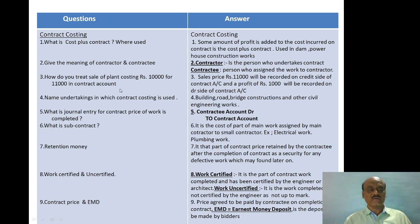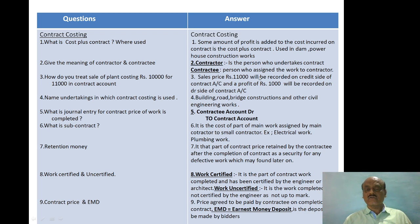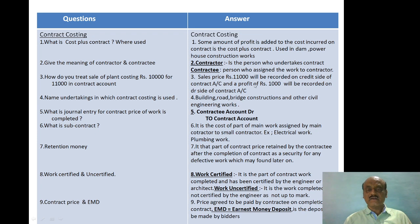How do you treat the sale of plant costing ₹10,000 for ₹11,000 in contract account? The amount of ₹11,000 will be recorded on the credit side of the contract account.